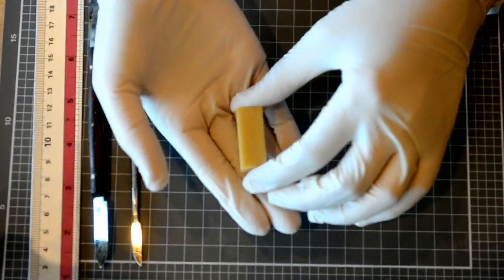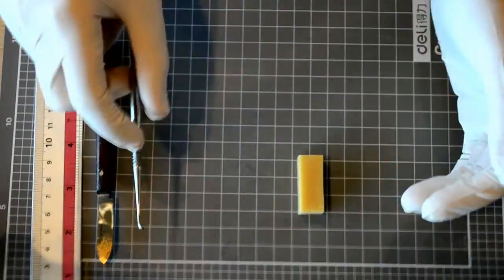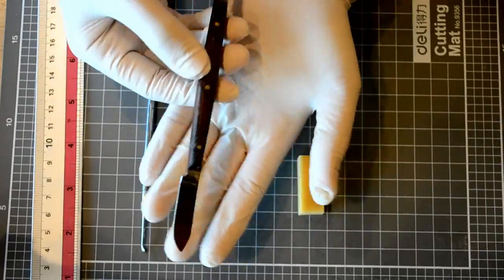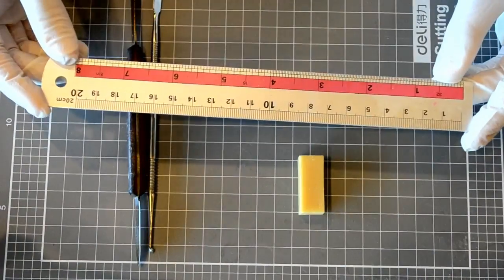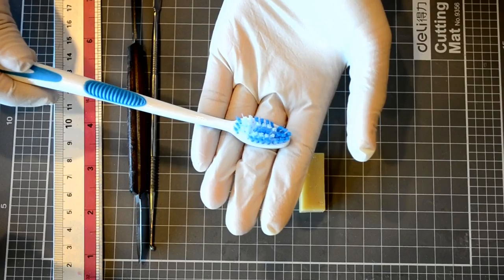What you'll need is a wax block, an electron carver, a wax knife, a ruler, and optionally, a toothbrush to brush off the tooth after carving.